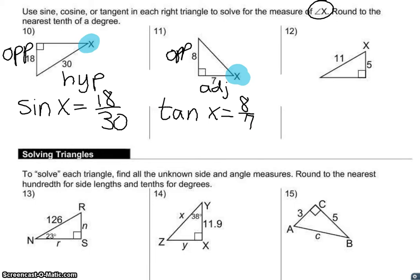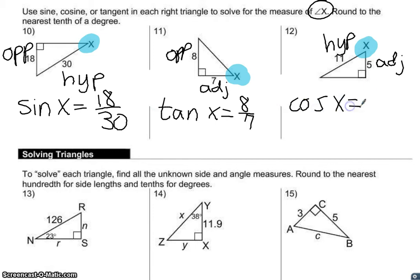On number 12 we have angle x. Labeling the sides, 11 is opposite the right angle so that's my hypotenuse, and 5 is right next to angle x so that's my adjacent. The function connecting adjacent and hypotenuse is cosine, so cosine of x equals 5 over 11. That's all we have to set up for each of these triangles.